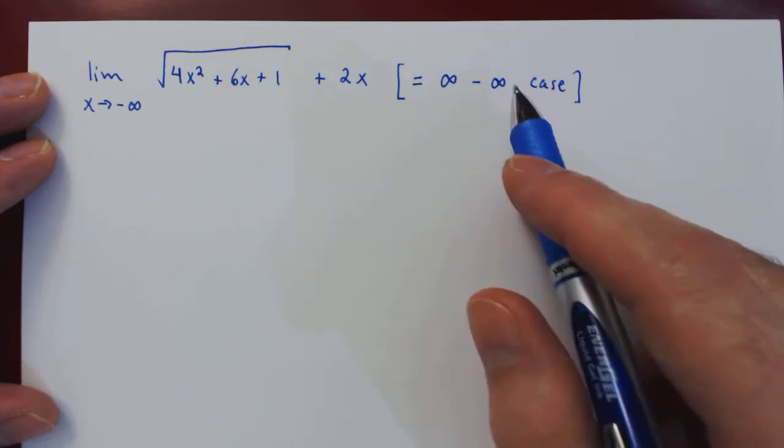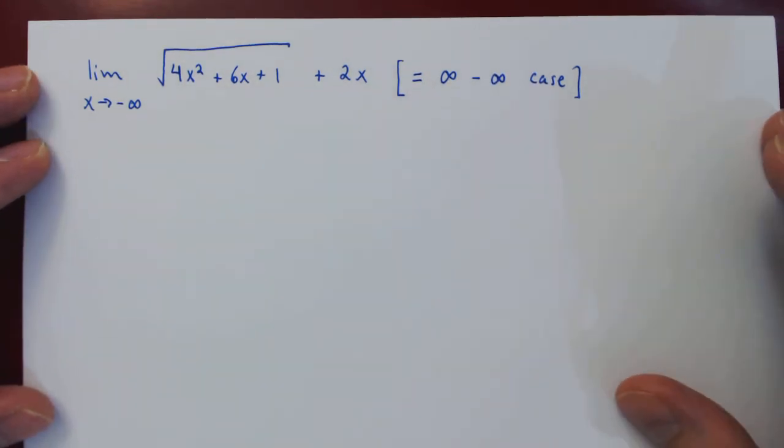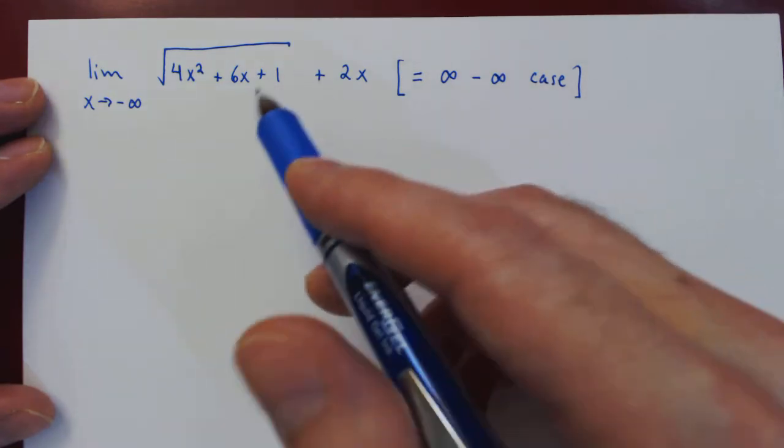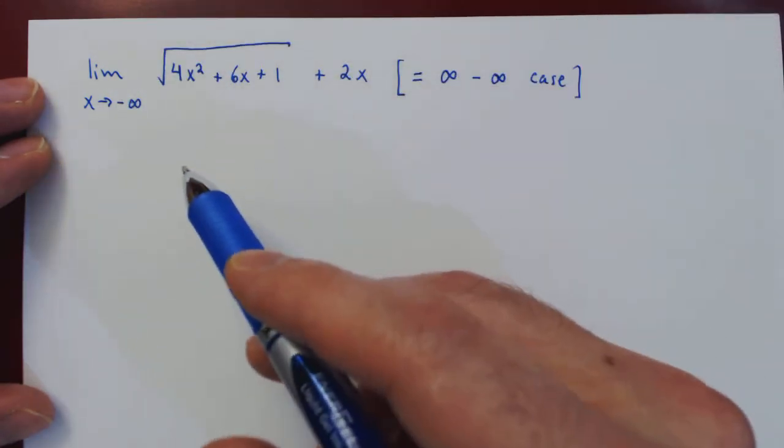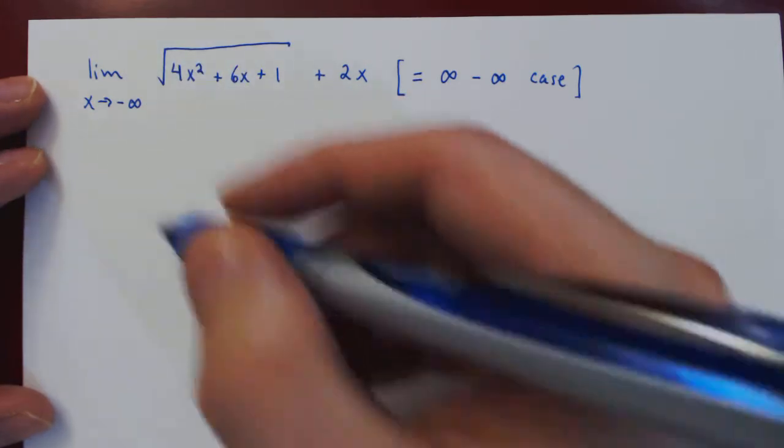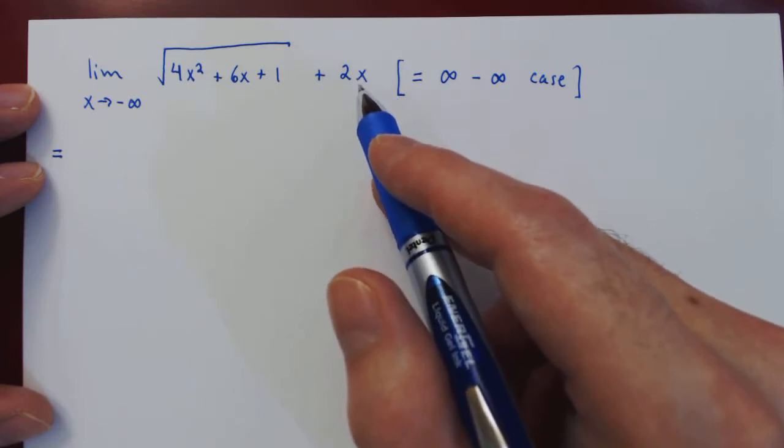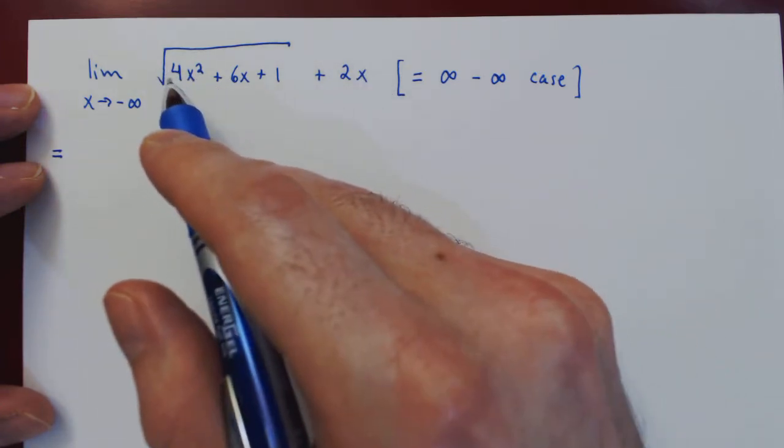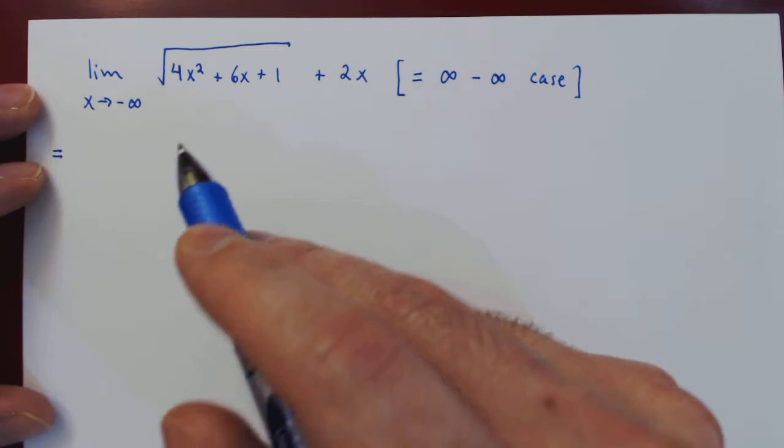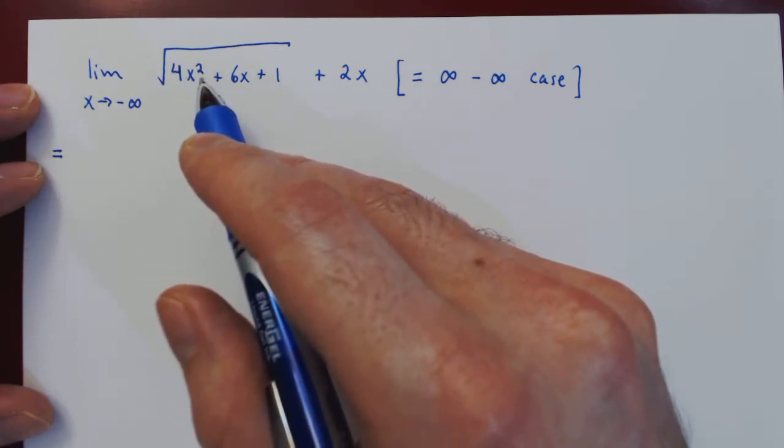So what we have is an indeterminate case, as we are subtracting two larger and larger quantities, so it's not clear what the limit might be. Well, as always, we can try to emphasize the dominant term, that is the largest term, by factoring it.